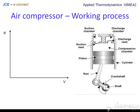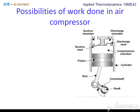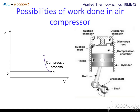Looking at the different processes on a PV diagram: 0 to 1 is the suction process, 1 to 2 is the compression process, and 2 to 3 is the delivery process. The focus is on the compression process because the compressor is a work-absorbing device. One can fit various types of processes to compress the working fluid: 1 to 2 double dash is the adiabatic compression, 1 to 2 is the polytropic compression, and 1 to 2 dash is the isothermal compression process, followed by the delivery process.